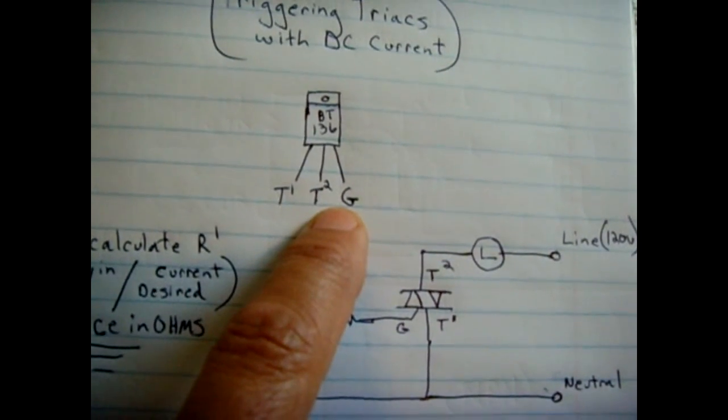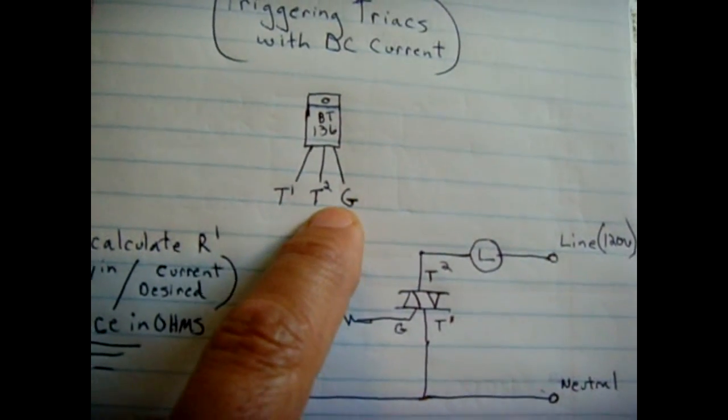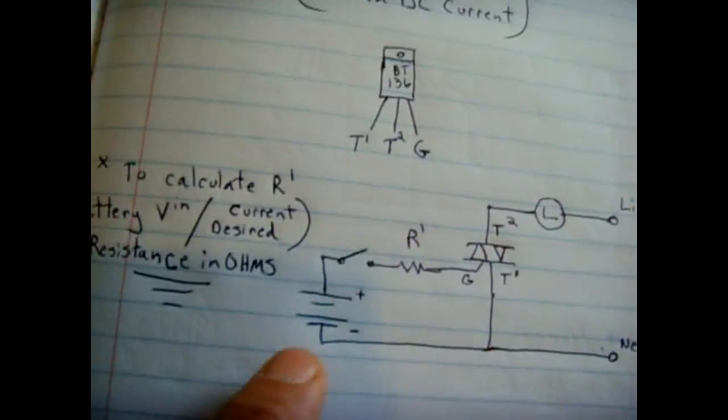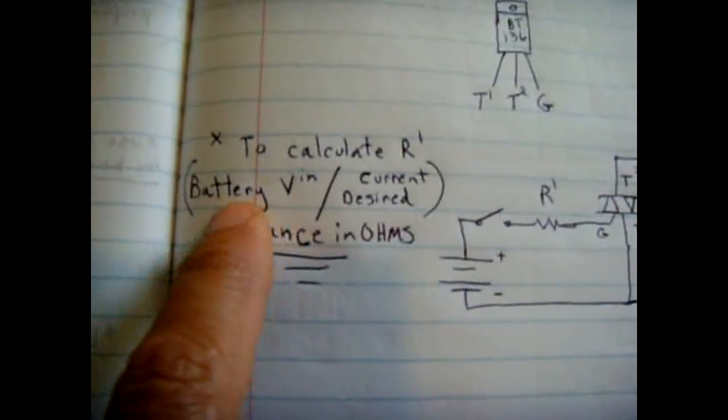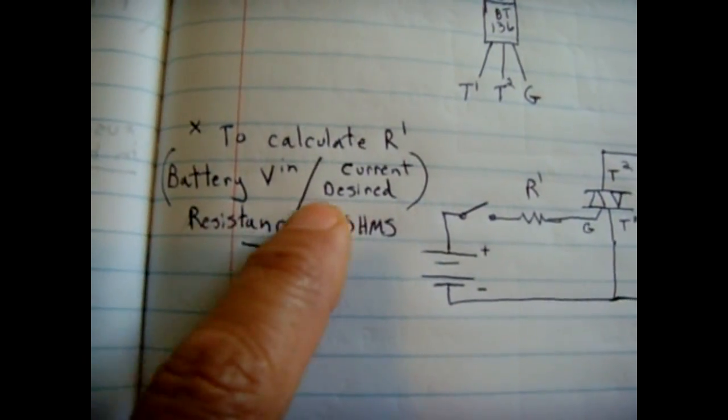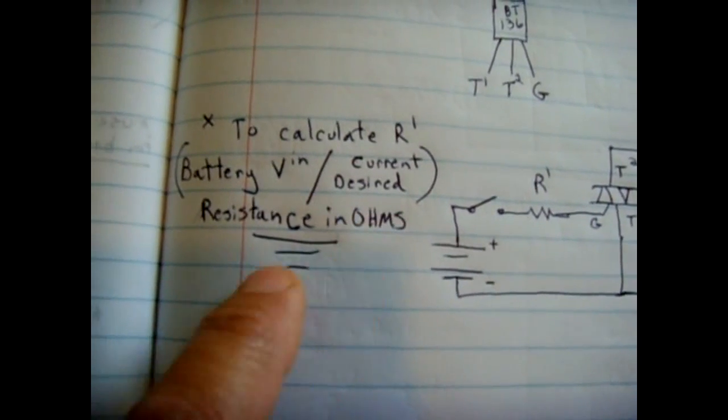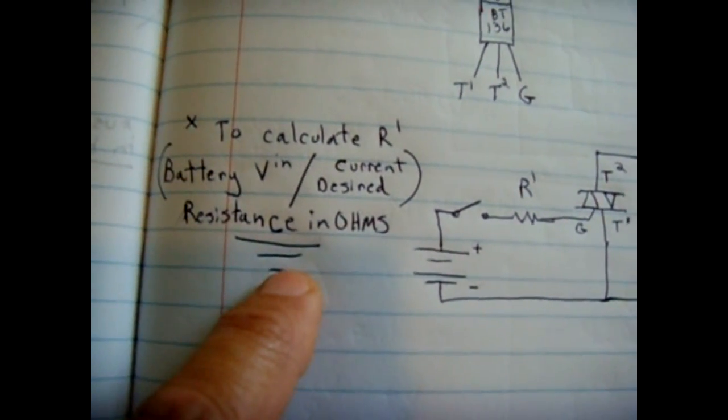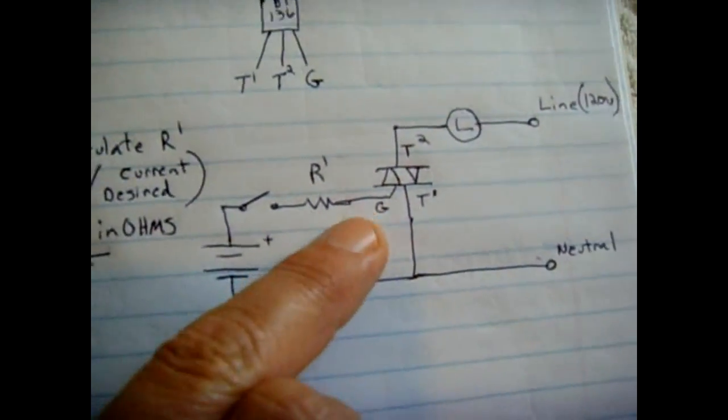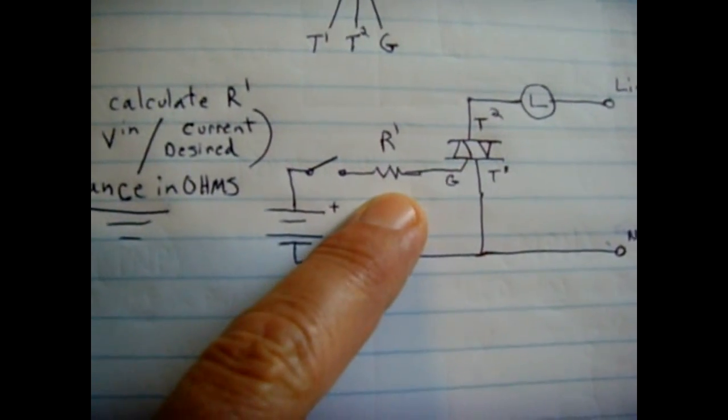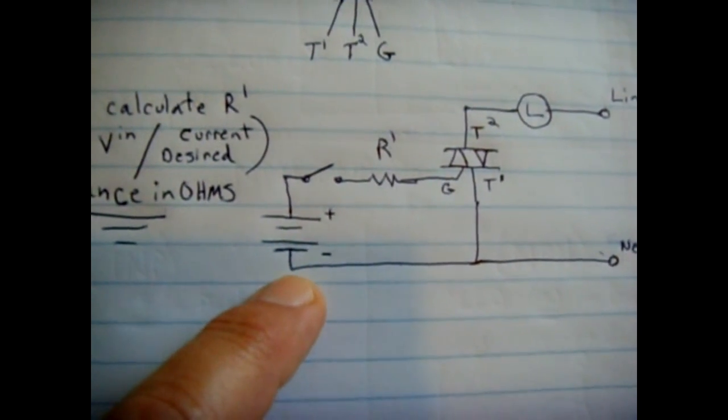Then you have a resistor to limit the current going into the gate of the triac. With this BT 136, the maximum is 35 milliamps and the voltage maximum I think is 12. To calculate, it's very simple: you just take the voltage and divide by the current you desire and you'll get the resistance in ohms.